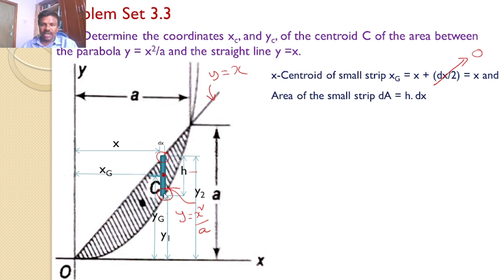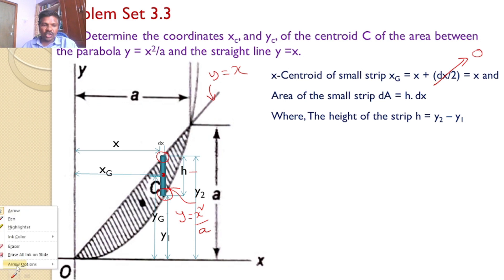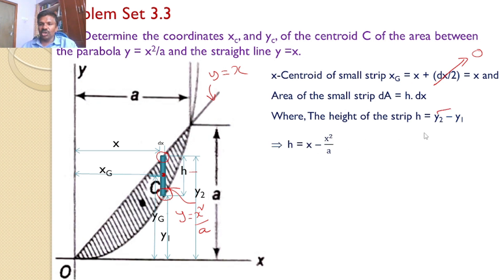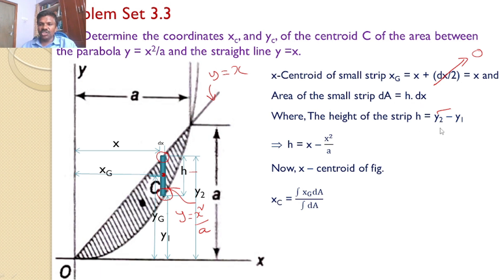The area of the small strip, da, is equal to h·dx. Now, h = y2 − y1. As mentioned, y2 is a point on the straight line y = x and y1 is a point on the curve y = x²/a. So h = x − x²/a. The x-centroid of the figure is calculated using xc = ∫xg·da / ∫da, where xg = x and da = h·dx with h = y2 − y1, y2 = x and y1 = x²/a.